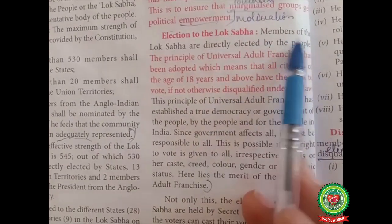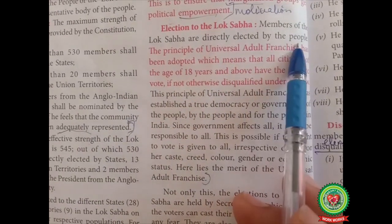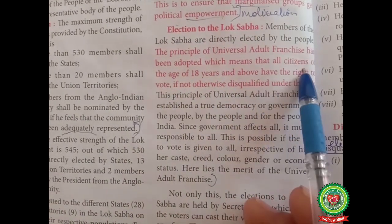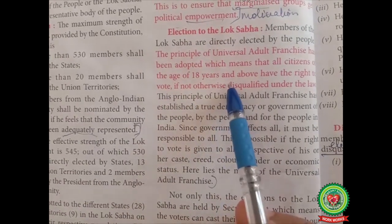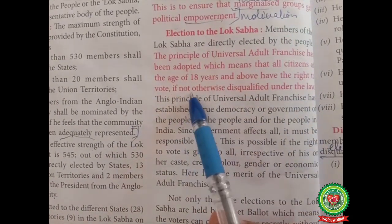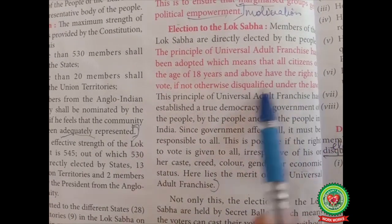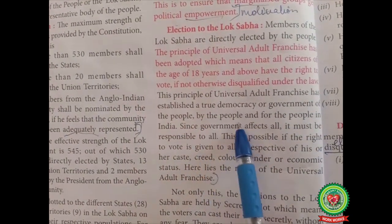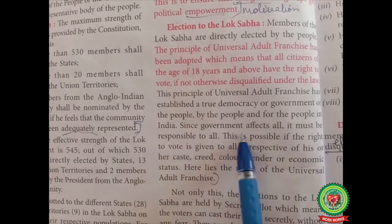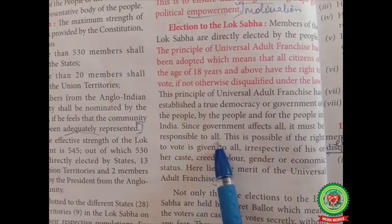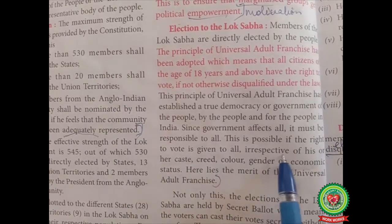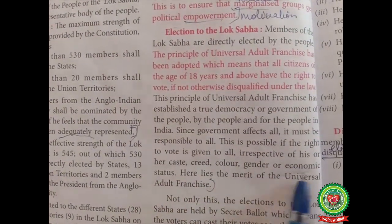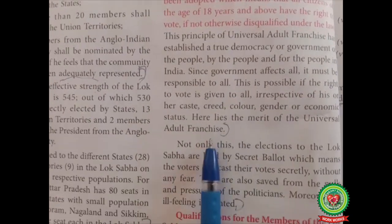Election to the Lok Sabha. Members of the Lok Sabha are directly elected by the people. The principle of universal adult franchise has been adopted, which means that all citizens of the age of 18 years and above have the right to vote, if not otherwise disqualified under the law. This principle has established a true democracy — government of the people, by the people, and for the people — irrespective of caste, creed, color, gender, or economic status.